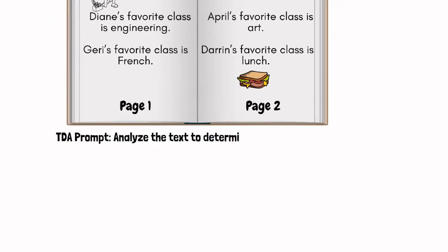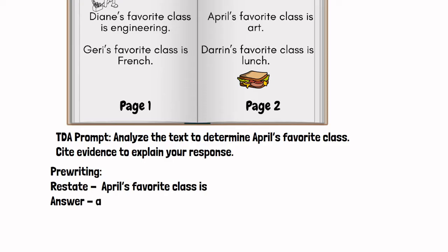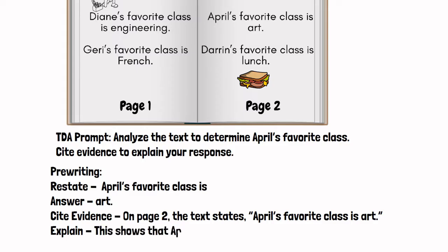What if the prompt was: analyze the text to determine April's favorite class? Cite evidence to explain your response. Like I told you, this was an easy example. Here's what I would do for my pre-writing. I would write restate, answer, cite evidence, and explain, and I would fill it in like this. I flip the question: April's favorite class is. I provide the answer: art.